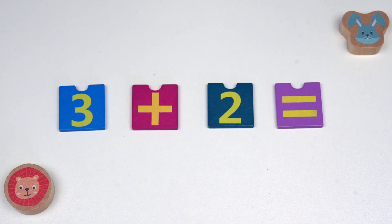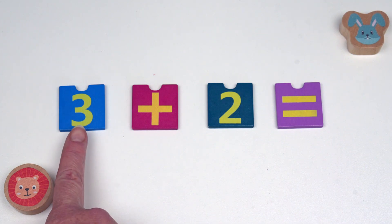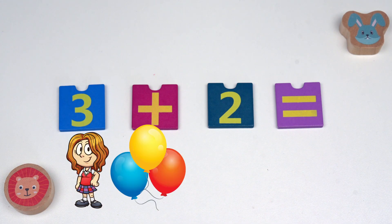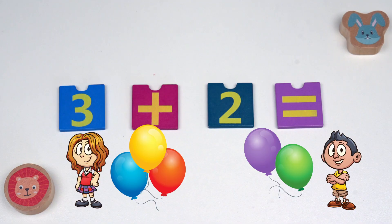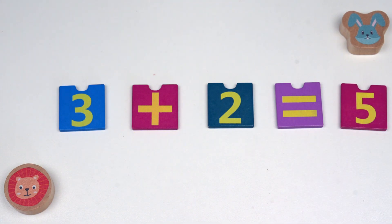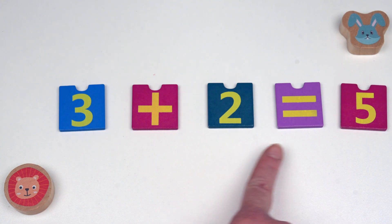How about we try another one? Here we have three plus two equals. This time let's use some balloons to figure this out. If you have three balloons and your friend gives you two more, we will be adding two balloons to the three you already have. How many balloons do you have now? One, two, three, four, five. You would have five balloons. Three plus two equals five.